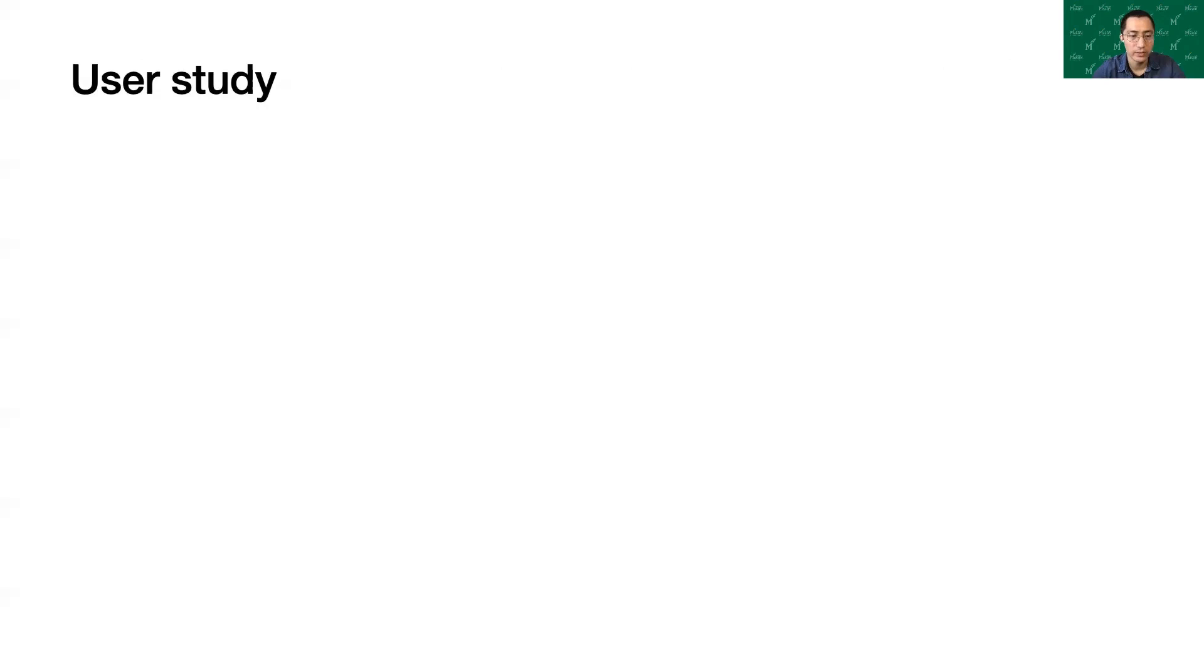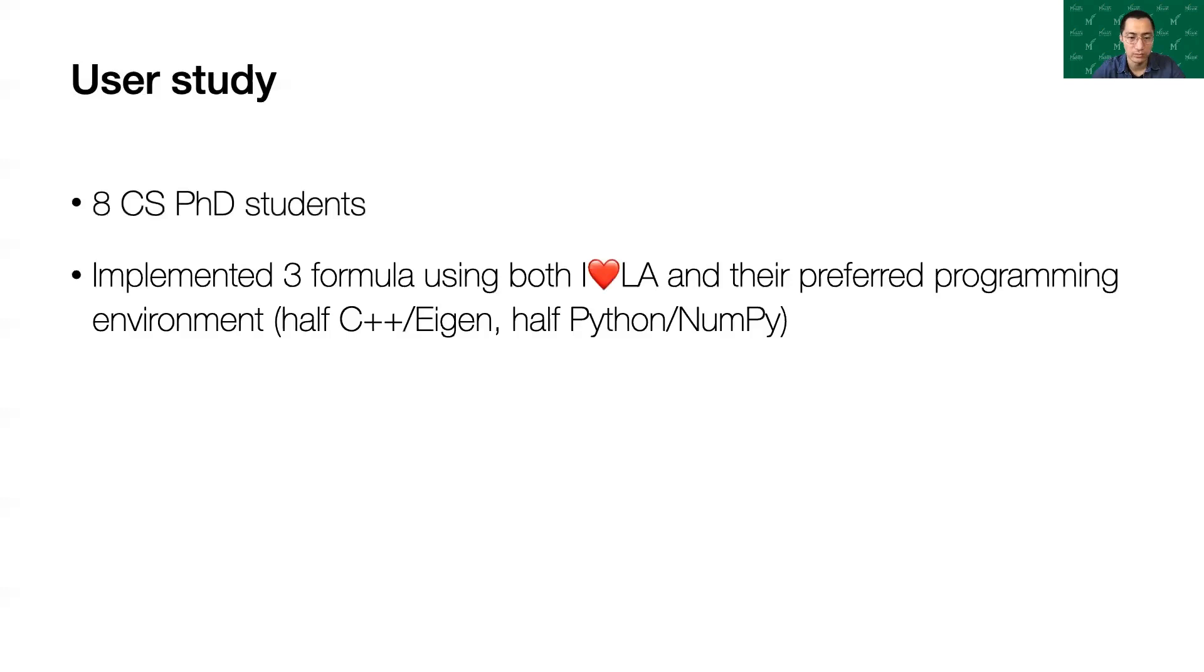Derivatives and gradients can be passed as parameters. The implementable ratio goes to 72 percent without them. We conducted a user study to understand whether I❤LA can be learned, and how it is perceived by experienced practitioners. Many programming language papers don't do this. We recruited eight computer science PhD students from two universities, based on their having at least six months experience implementing linear algebra formulas.